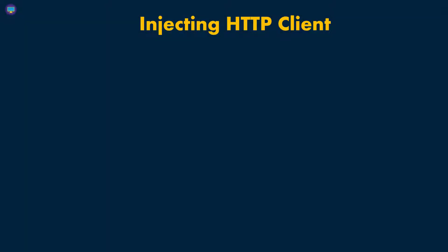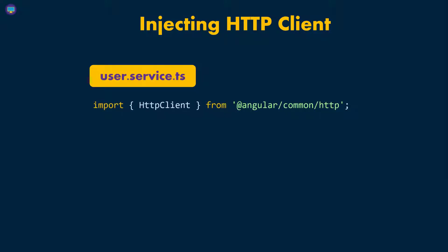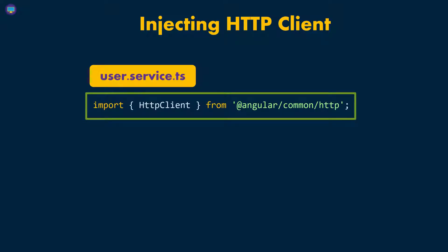Now we need to inject the HTTP client in our service. In our case, we have a UserService, and the assumption is that this UserService is going to be manipulating data relating to users. The first thing we have to do is import the HTTP client — we add an import statement in our class. As you can see, it's coming from the same library: @angular/common/http, the same library as the HttpClientModule.